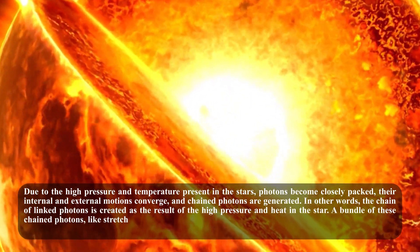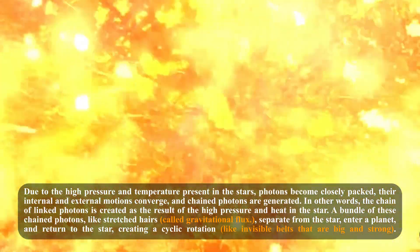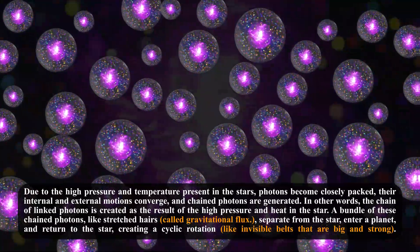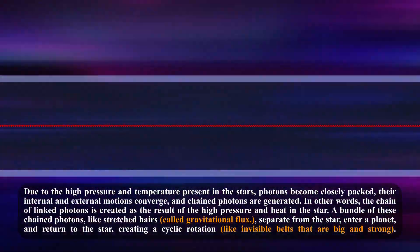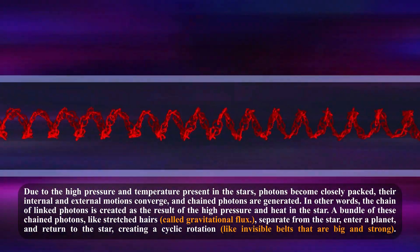Due to the high pressure and temperature present in the stars, photons become closely packed, their internal and external motions converge, and chained photons are generated. In other words, the chain of linked photons is created as a result of the high pressure and heat in the stars.